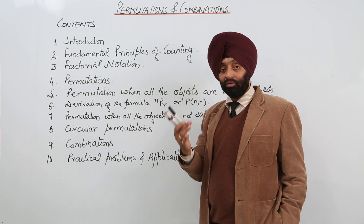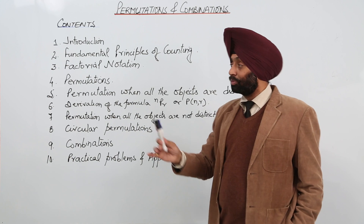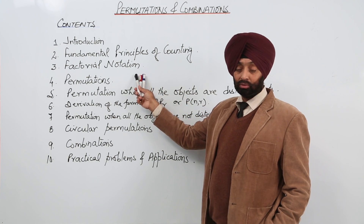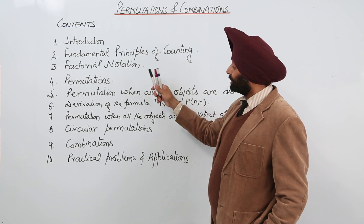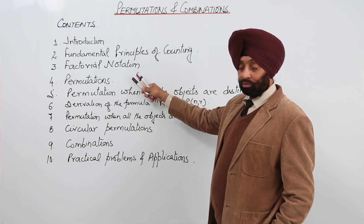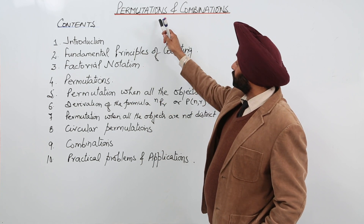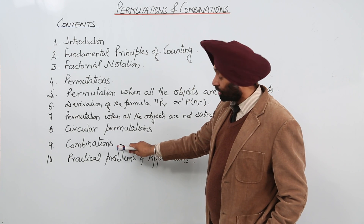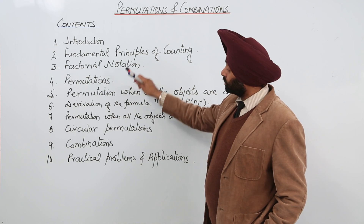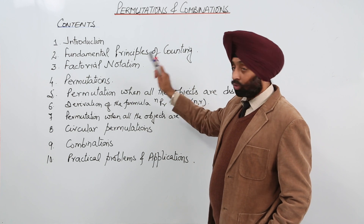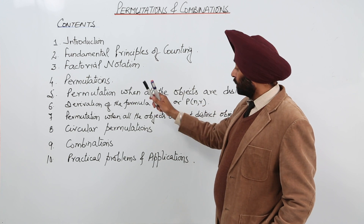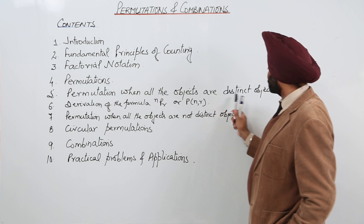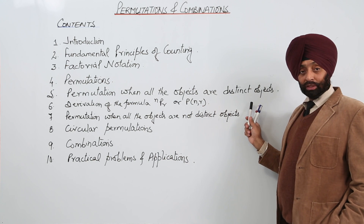You must have learned about factors, but this is a factorial. And then permutation — now according to the chapter, permutation when all the objects are distinct objects.